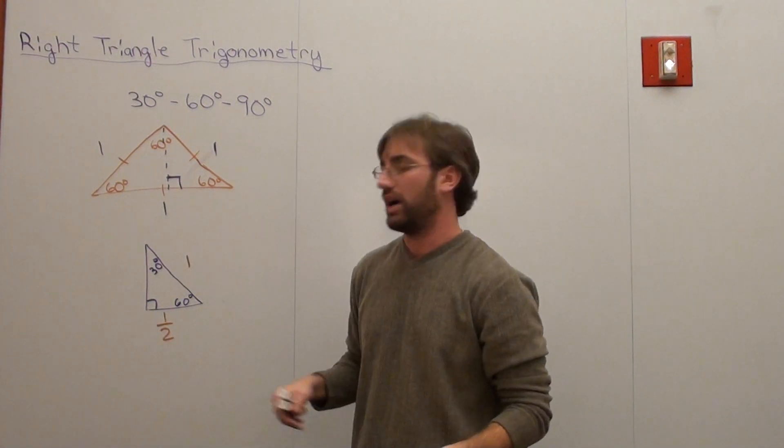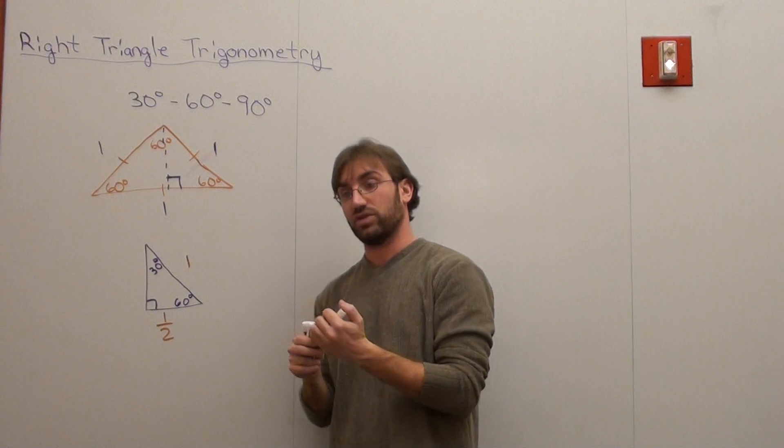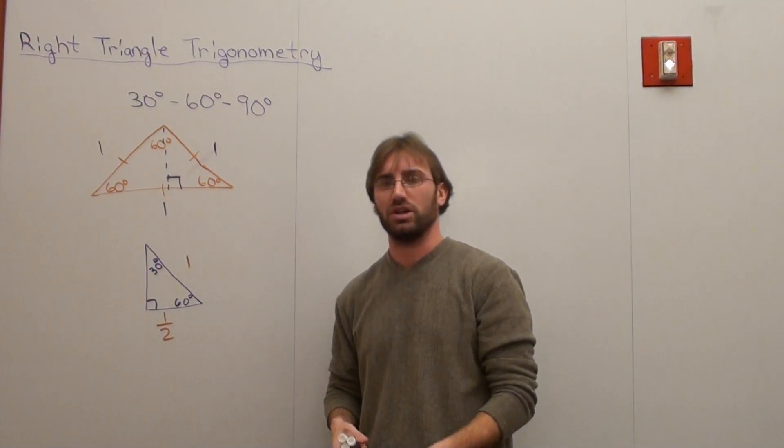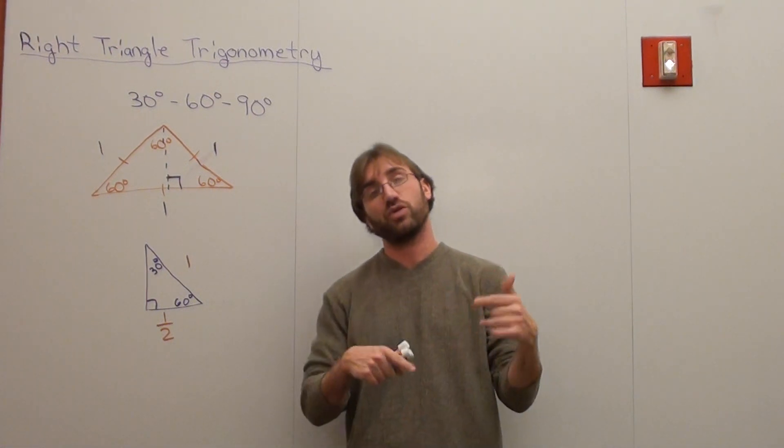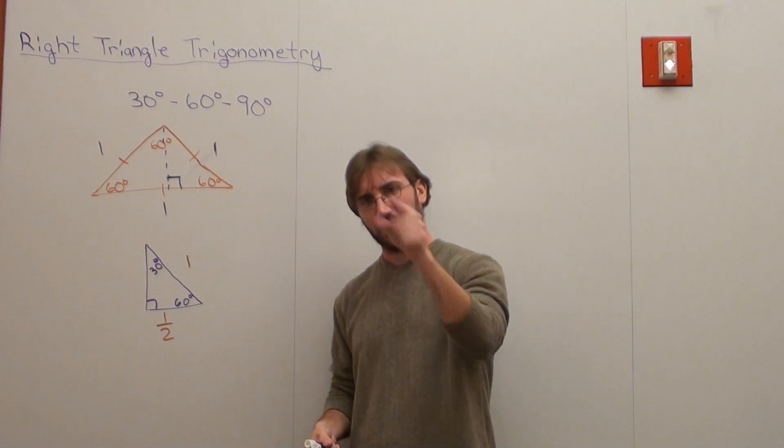And then I asked them, well, how do you figure out this last side right here? And everybody's puzzled for a second. They don't know, and it's kind of confusing. And I said, well, what kind of triangle is this? They said, it's a right triangle. I said, okay, what formula can you use on a right triangle? They said, can you use the Pythagorean theorem? Yes, you can.